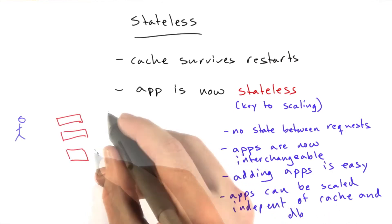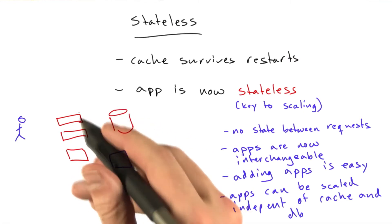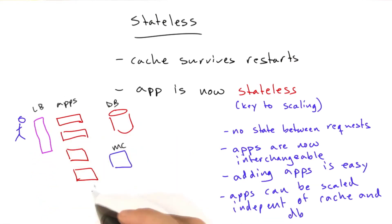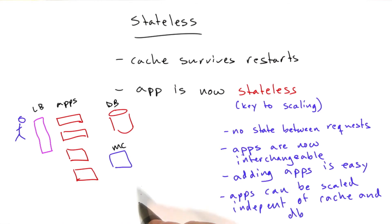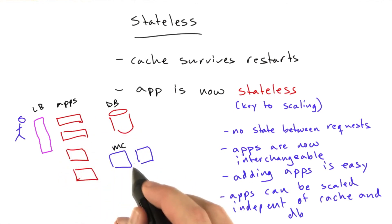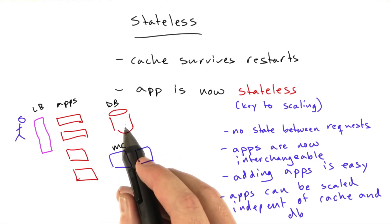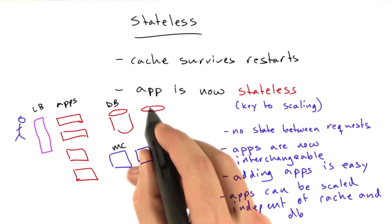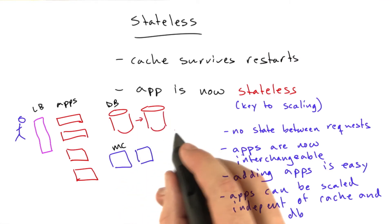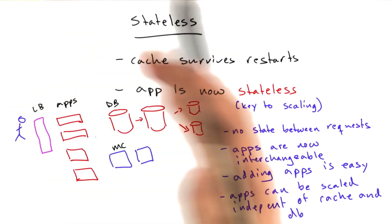We've got our app servers, we've got our database, and we've got our cache. If we find ourselves needing more app servers, we can add one. Let's add our load balancer in here for good measure. If we need another app server, we add one. If we need another memcache, we add one. Having lots of caches means we won't have to scale our database quite so fast. But if we need more databases, we talked about this in Unit 3 — we can go with replication or we can go with sharding. Now you're starting to see the bigger picture of how a website might grow.